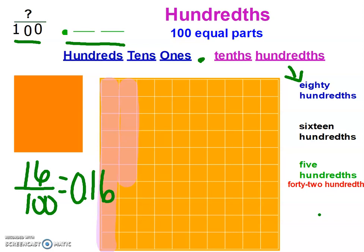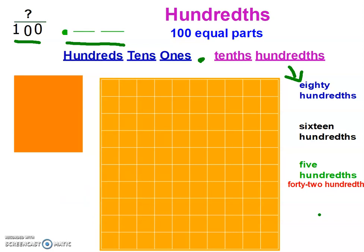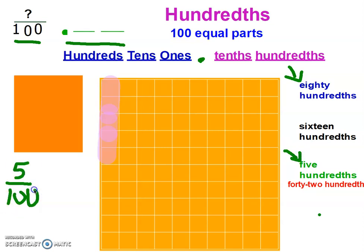Five hundredths — you should have five small squares, and to write that as a fraction, five out of a hundred equals 0.05. Remember, hundredths is two places away from the decimal.